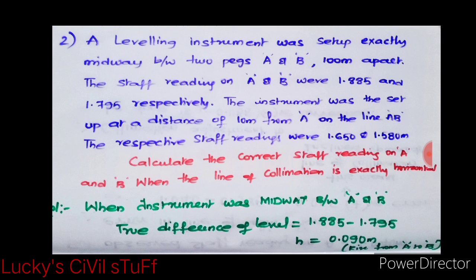The instrument was set up at a distance of 10 meters away from A on the line AB, and the respective staff readings were 1.650 meters and 1.580 meters. Calculate the correct staff reading on A and B when the line of collimation is exactly horizontal.